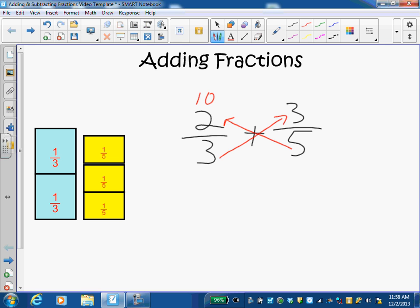Then I'm going to go from three across to three, three times three is nine. So the first thing this tells me just by looking at it is that two-thirds is larger than three-fifths because ten is larger than nine. This would be great if we were comparing the two fractions, but I'm actually adding them together.